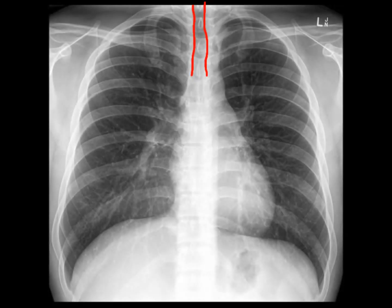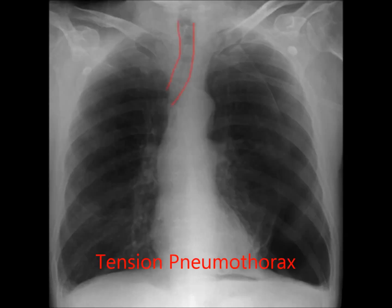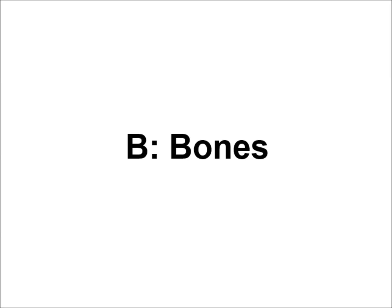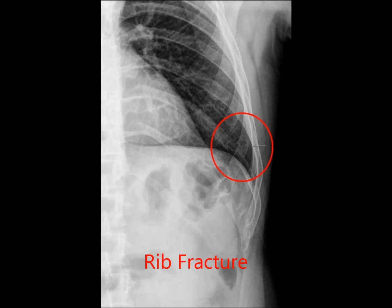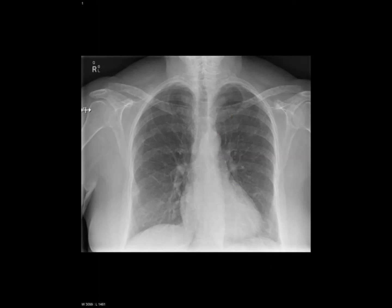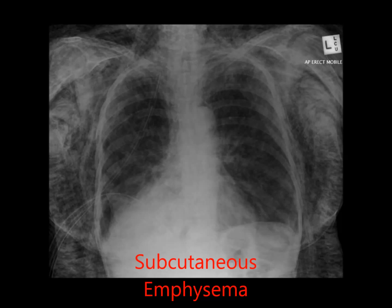A stands for airway. A normal airway is central and open. An airway that deviates to one side may be due to a tension pneumothorax. B stands for bones. Start at the top and work your way down, making sure you look at all the bones visible on the film. The outlines of each bone should have a smooth contour, and a break in the contour could be a subtle indication of a fracture. Also look for any lesions where the bone is more or less dense than it should be, such as the punched-out lesions often seen in multiple myeloma. Also look at the external soft tissue for any abnormalities.